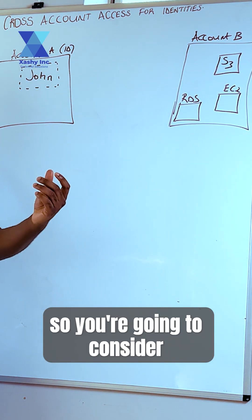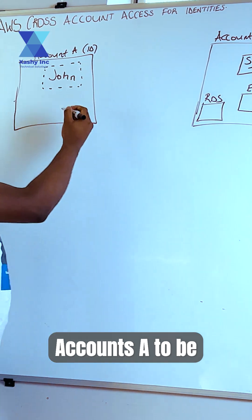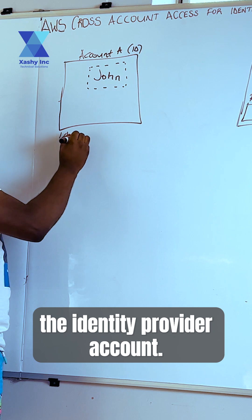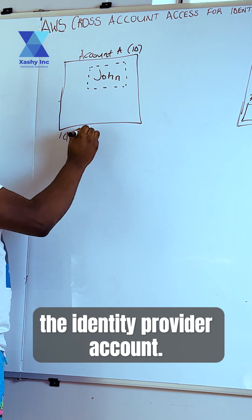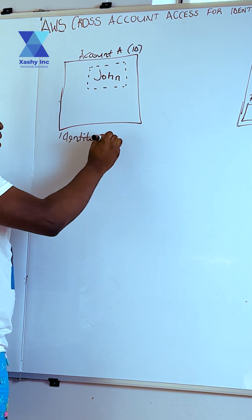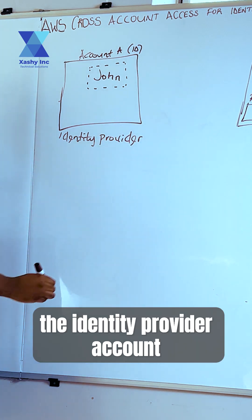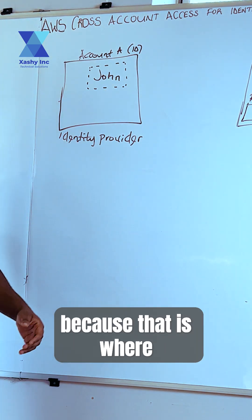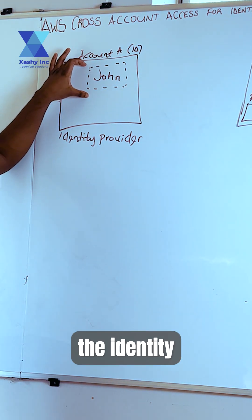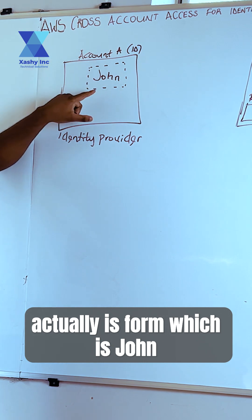You are going to consider account A to be the identity provider account. We are considering this account to be the identity provider account because that is where the identity actually comes from, which is John.